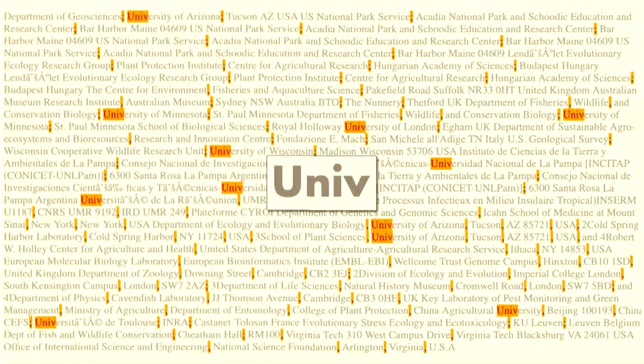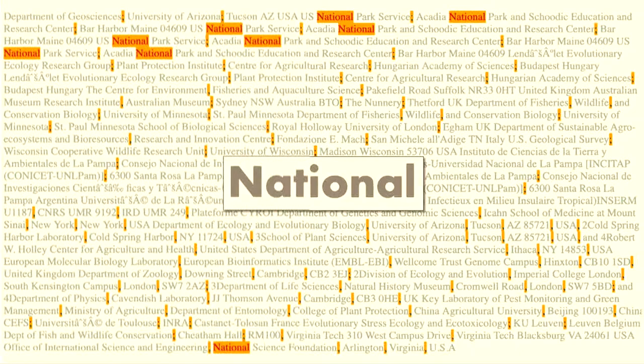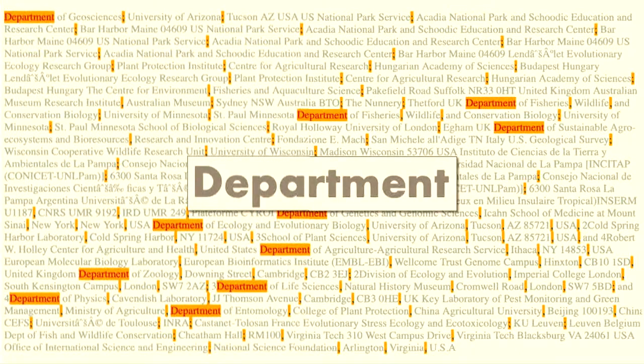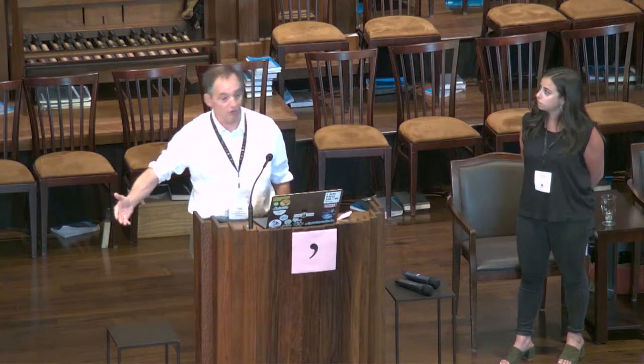The most common word in names of research organizations happens to be university. It appears in many languages, so we use 'univ,' which works in most languages. Things like 'national' is also useful in a lot of situations, and a lot of these tokens are things like 'department.' Organizations are hierarchical — there's usually a department of X, university of Y. ROR is currently focusing on the university level, but I want to build this tool to handle different levels of hierarchy. Department can be important, but there are also strings where department is actually the identifier for the organization — like Department of Agriculture or Department of Interior.